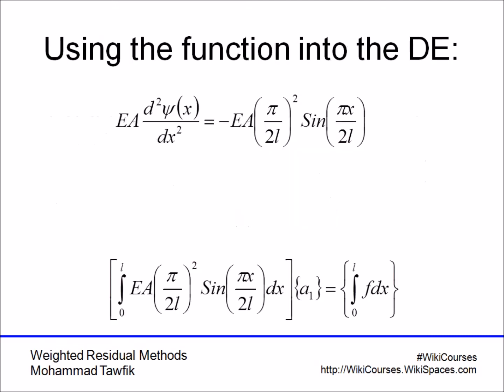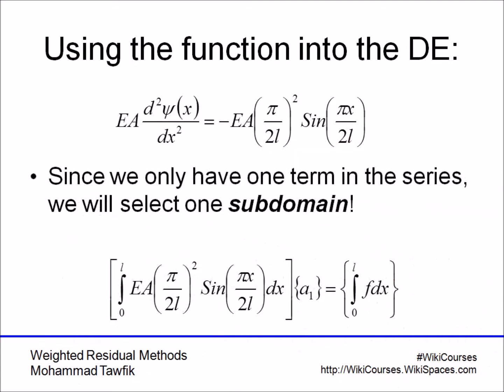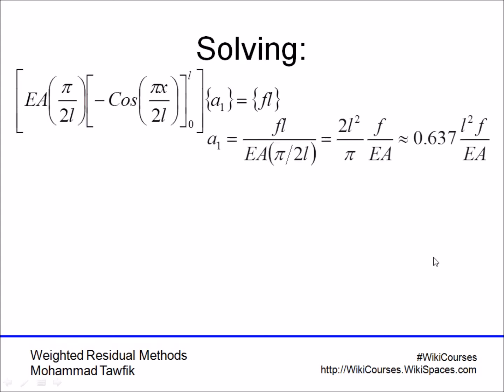In this case, since we have only one function, we can use only one subdomain, so our subdomain will be the whole domain, which is from 0 to L. In this case, substituting and performing the integration, you will get the integral as EA pi over 2L.